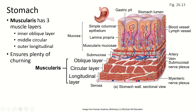The muscularis of the stomach has three layers. This is the only place in the digestive system where there are three layers of muscle — everywhere else has two layers. All the others have the longitudinal layer and the circular layer. The stomach adds an oblique layer that's inside, closer to the lumen.